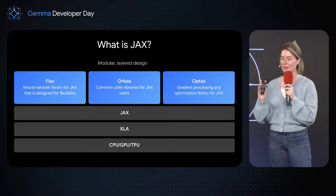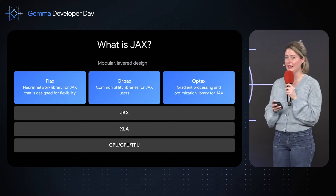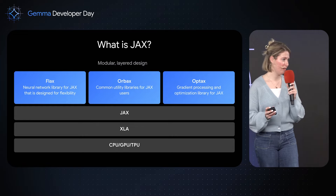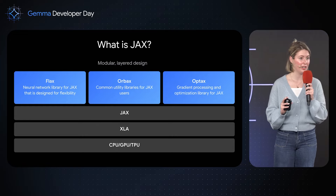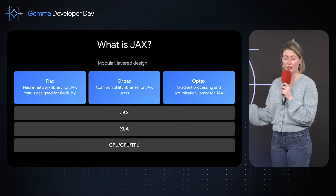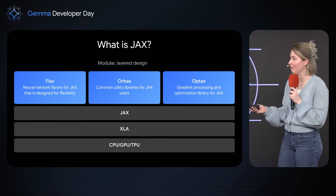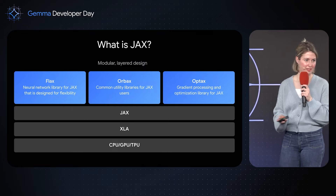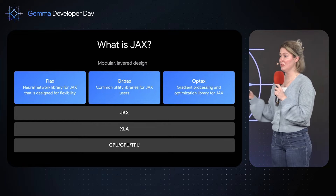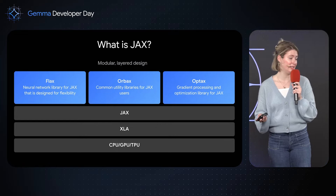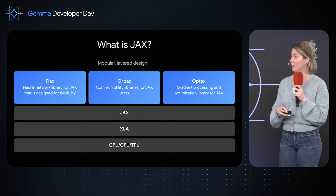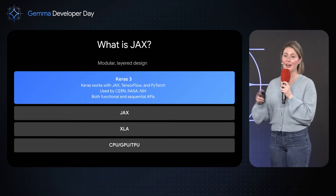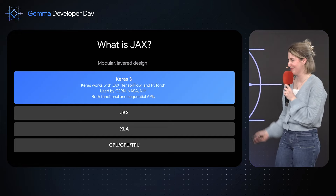One of the things that has been incredibly beneficial about using JAX is its modular layer design. This means you can combine lots of different frameworks and still maintain all the benefits of JAX. For Gemma, in particular, we used a combination of FLAX, a neural network library, ORBAX, a common JAX utilities library, and OPTAX for gradient processing and optimization. If instead you were more interested in scientific computing, you could switch out FLAX for something like Equinox.